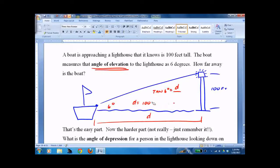Nothing's wrong with my calculator - I made a mistake. Tan is opposite over adjacent, which is 100 over D, not D over 100. Distance equals 100 divided by tan of 6, and we end up with 950 feet to the boat.